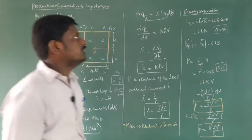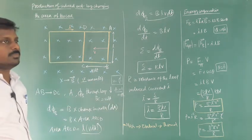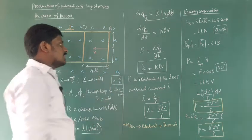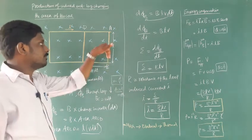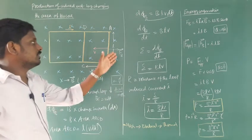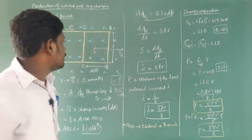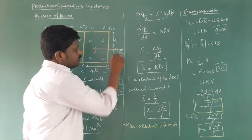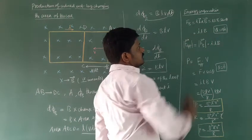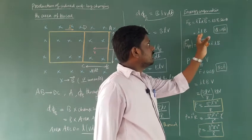Now for energy conservation: there is a current flowing through rod AB. The direction of current is found using Fleming's right-hand rule — we are moving in one direction, so the current flows in the opposite direction; there is a cause and effect. Since a current-carrying conductor is placed in a uniform magnetic field perpendicular to each other, there is a magnetic force acting in the opposite direction. The magnetic force F equals IL cross B. Since the length of the rod and magnetic field are mutually perpendicular, sin 90° equals 1, so the magnetic force equals ILB.